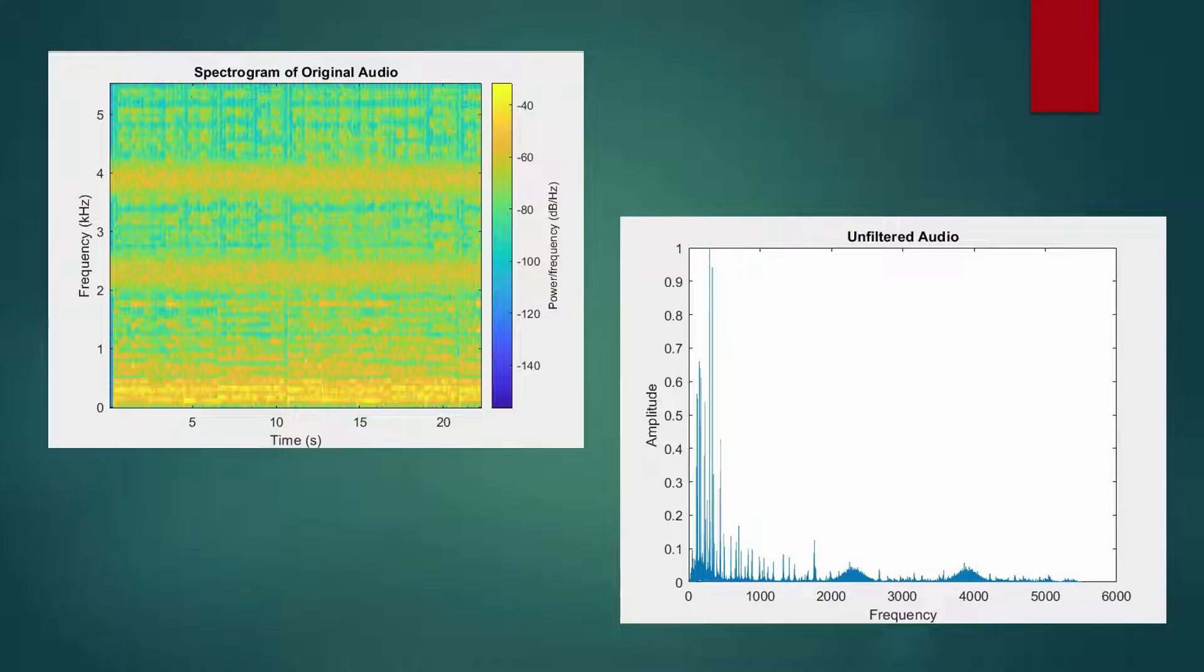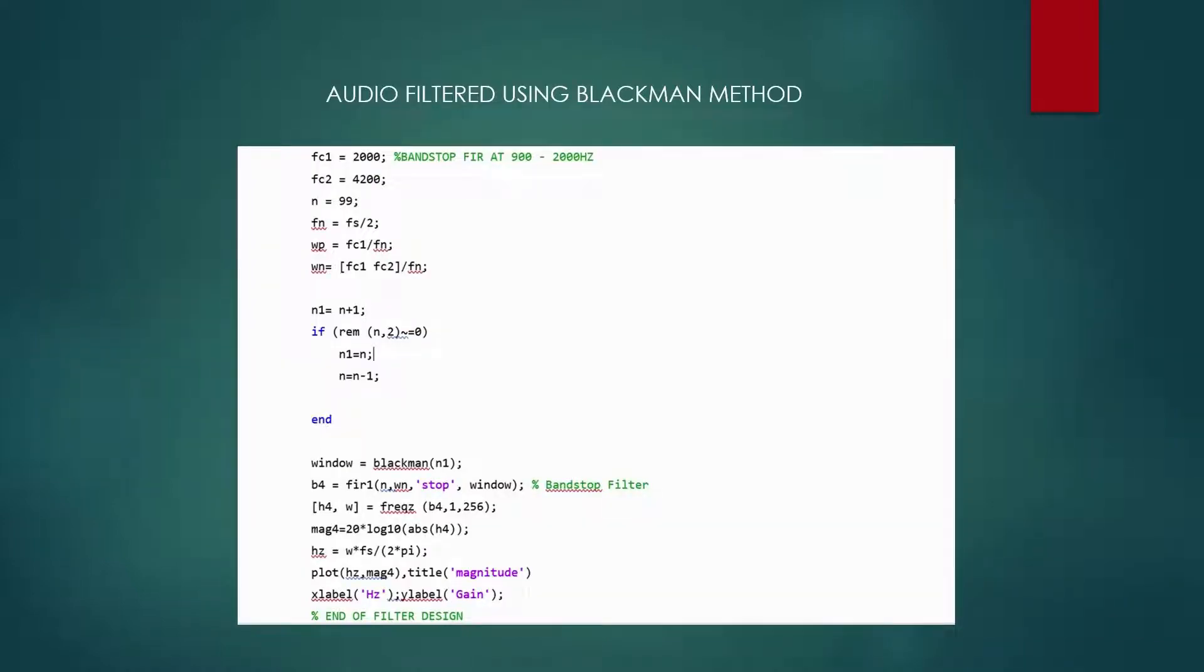To remove the unwanted noise, Blackman band stop filter method is used in the second coding. Blackman method is categorized as one of the FIR filters.